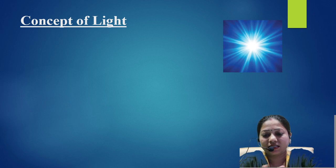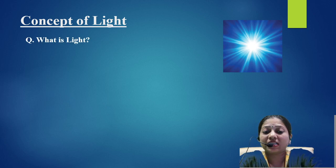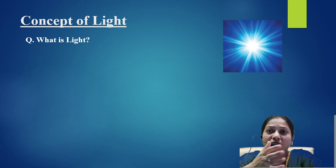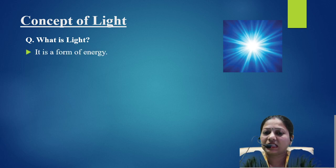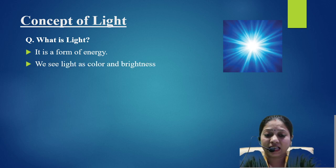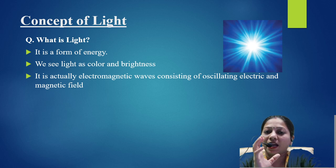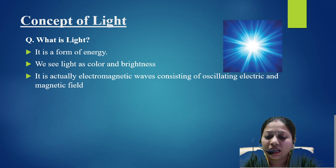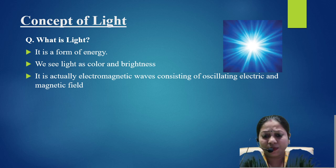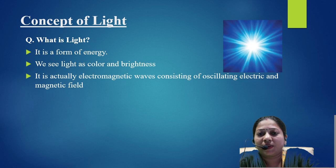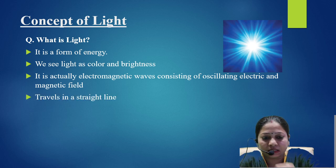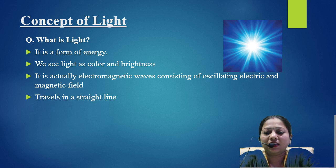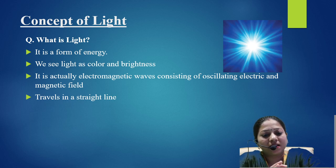As you can see, this is light. If I ask you what is light — basically light is a form of energy. We see light as color and brightness. If we define a light wave, it is actually an electromagnetic wave consisting of oscillating electric and magnetic fields. It travels in a straight line and is fundamentally a form of energy.